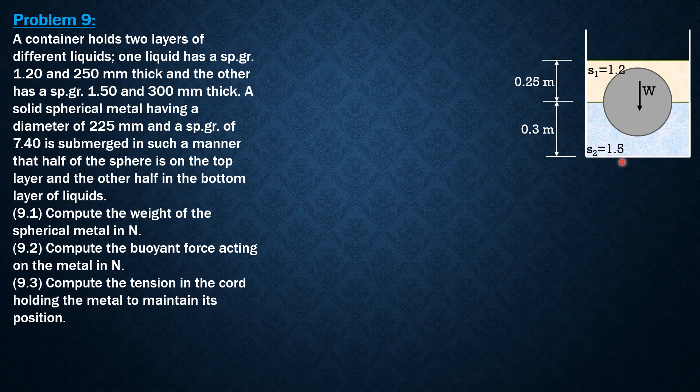The arrangement of the layers of liquid should be from lighter to denser. We have buoyant force BF1 and BF2 acting. This metal will definitely sink because its specific gravity is 7.4, so a cord is attached holding the position of the sphere as shown.